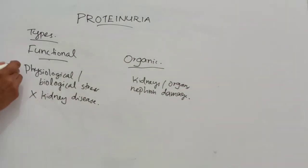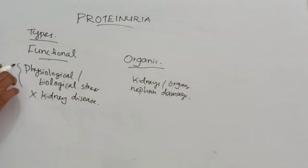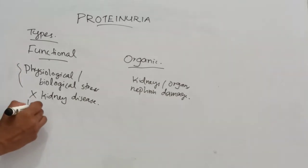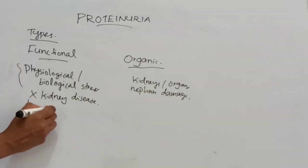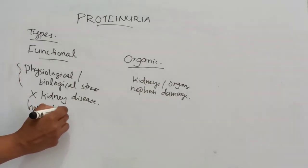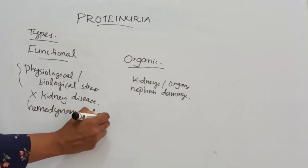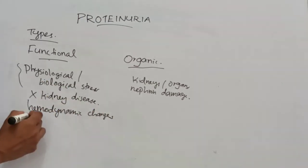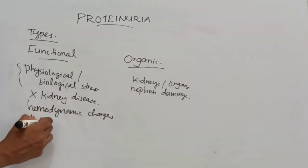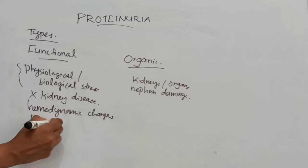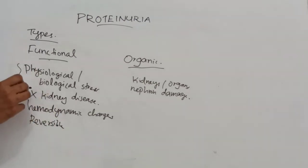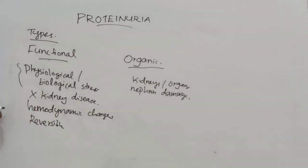Functional proteinuria is due to hemodynamic changes, which are reversible. Reversible means this proteinuria disappears when the precipitating factors are resolved.